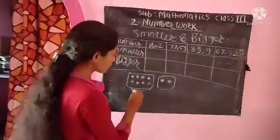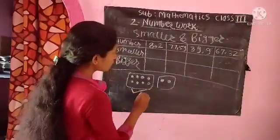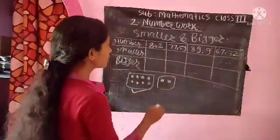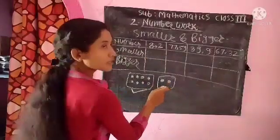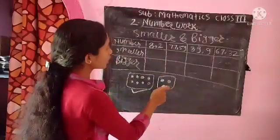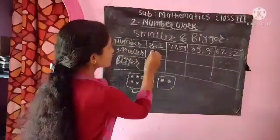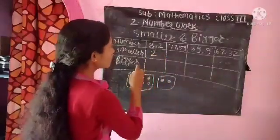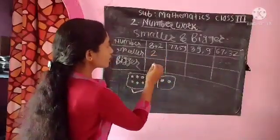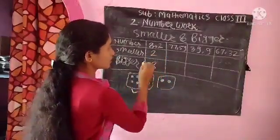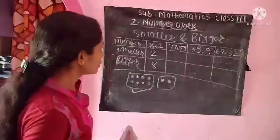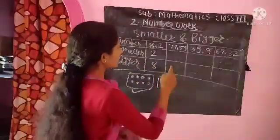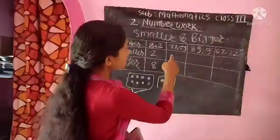At two points. So, we can write the smaller numbers. The smaller number here is 2 and the bigger number is 8. Then next, look at this.